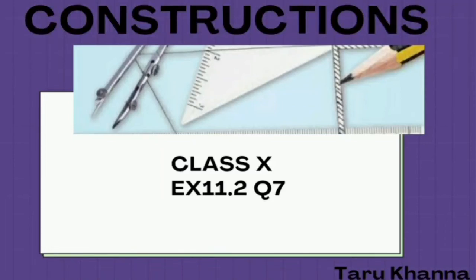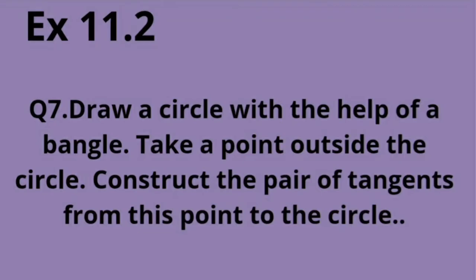Hello everyone. In this video we will be discussing question 7 of exercise 11.2 of class 10. This question says: draw a circle with the help of a bangle, take a point outside the circle, and construct the pair of tangents from this point to the circle.